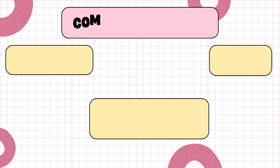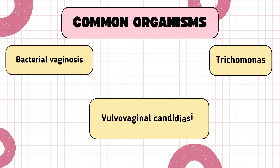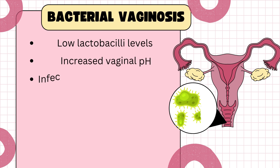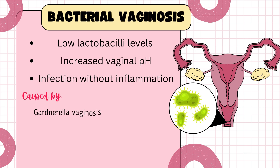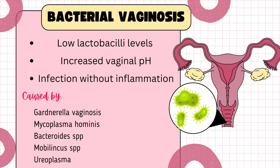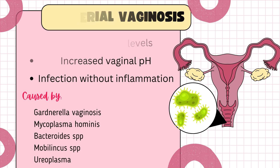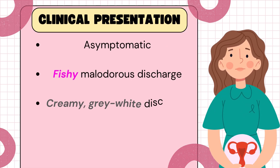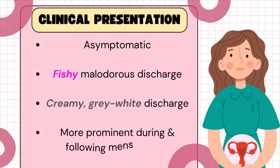Now let's talk about the three most common genitourinary tract infections in females. Bacterial vaginosis results from an imbalance in vaginal flora, often due to a decrease in Lactobacillus and an overgrowth of anaerobes like Gardnerella vaginalis. These patients will typically present with a thin white or grayish vaginal discharge, a strong fishy odor particularly after sexual intercourse or menstruation, and mild vaginal itching or irritation.